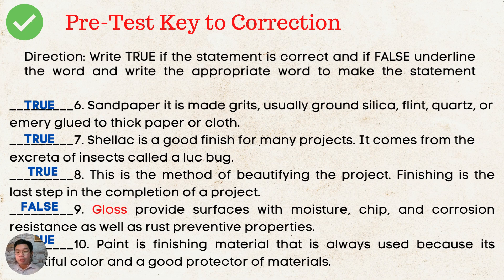For number 6, sandpaper is made of grits, usually ground silica, flint, quartz, or emery glued to thick paper or cloth — true. 7. Shellac is a good finish for many projects; it comes from the excreta of insects called a lac bug — true. 8. Finishing is the last step in the completion of a project — the answer is true. 9. Gloss provides surfaces with moisture, chip, and corrosion resistance, as well as rust preventive properties — the answer is false.